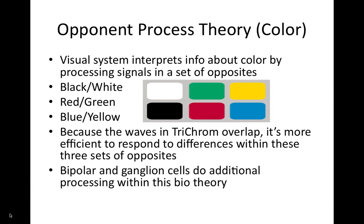Also in color theory, there's the opponent process theory. The idea is that the visual system interprets information about color by processing signals in a set of opposites: black/white, red/green, blue/yellow. Because the waves in the trichromatic theory overlap, it's more efficient to use this system in the brain to respond to differences within these three sets of opposites. With this theory, the bipolar and ganglion cells have additional processing to do in picking up and perceiving color.